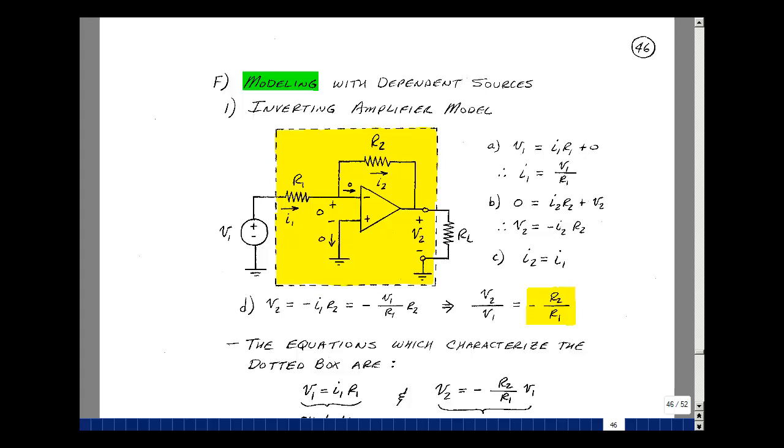Let's write the equations again for this amplifier. The rise in voltage is V1. The drop is going to be I1 times R1 plus a drop of zero. That's this equation right here. Solving for I1 is equal to V1 divided by R1. Go around this loop. The rise in voltage is zero. I have a drop of I2R2 and a drop of V2. That's this equation.